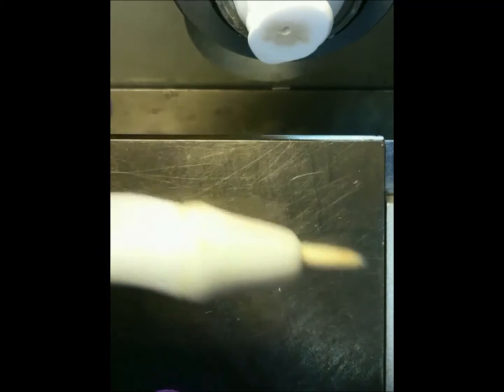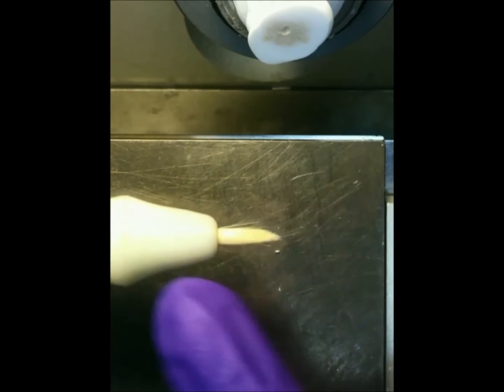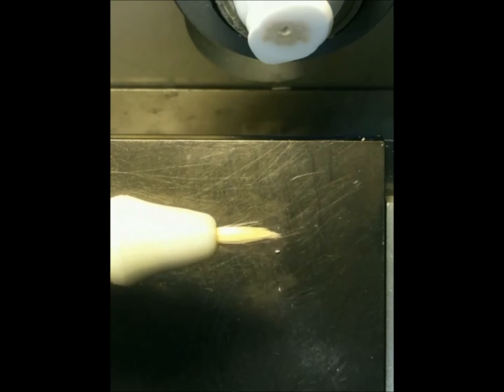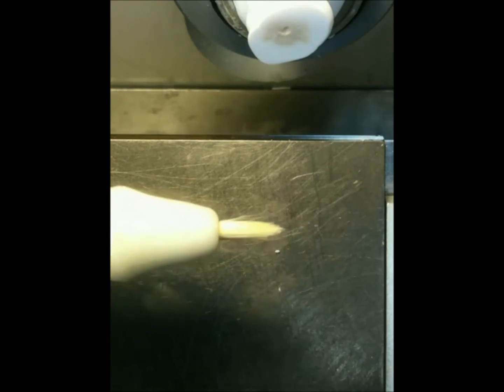VersaTool comes as a kit that includes a handle and three tips. Tips magnetically attach to the handle so that one tip can be easily swapped for another one.